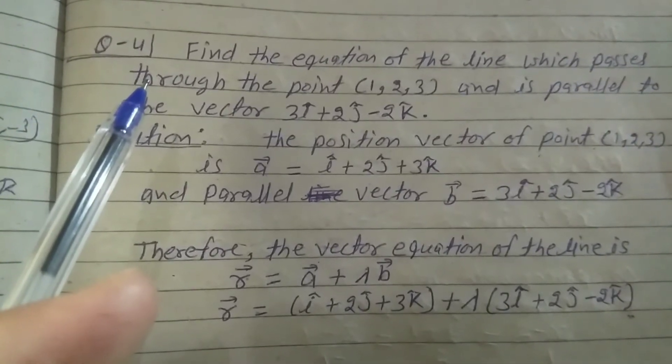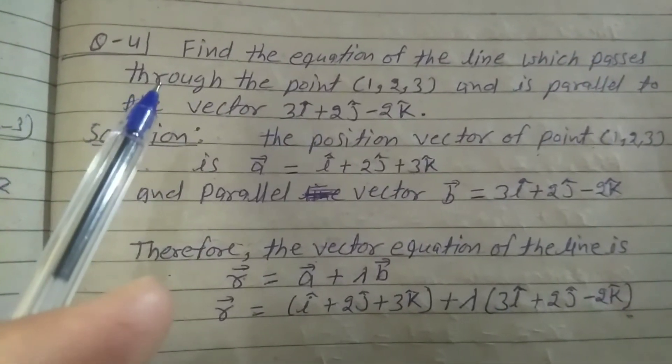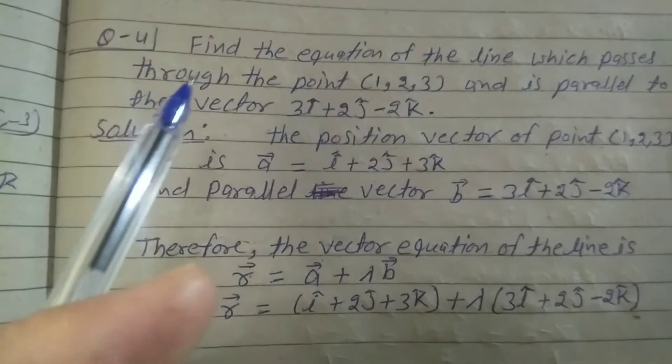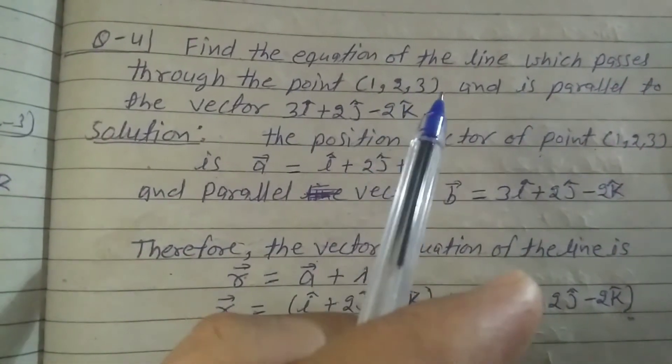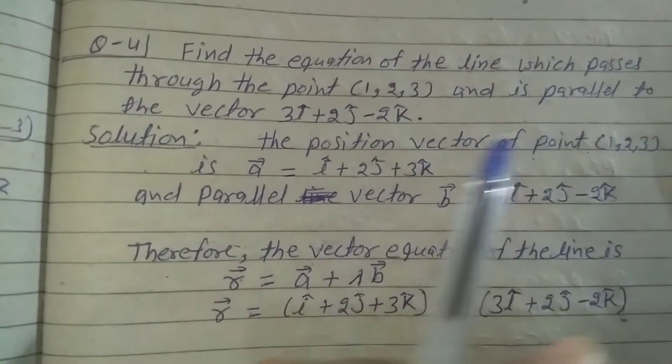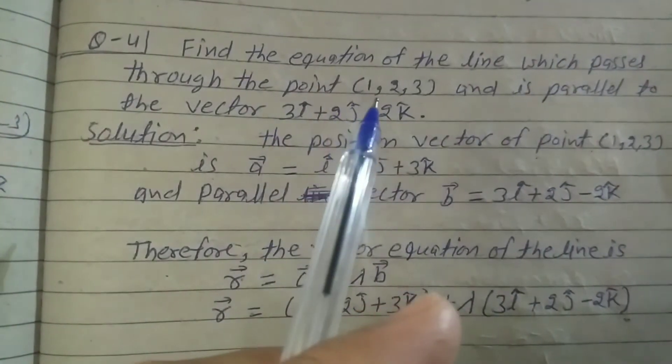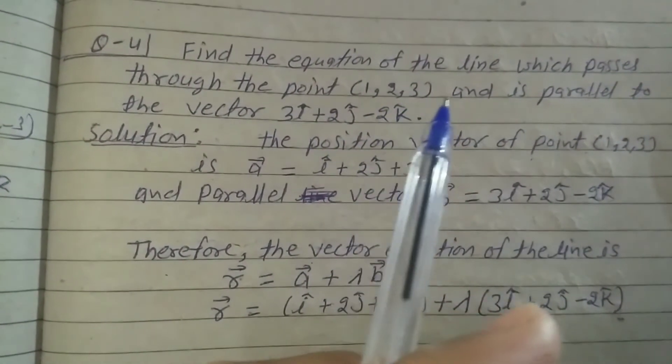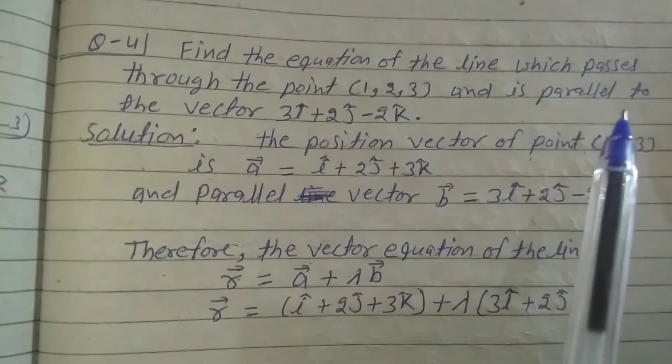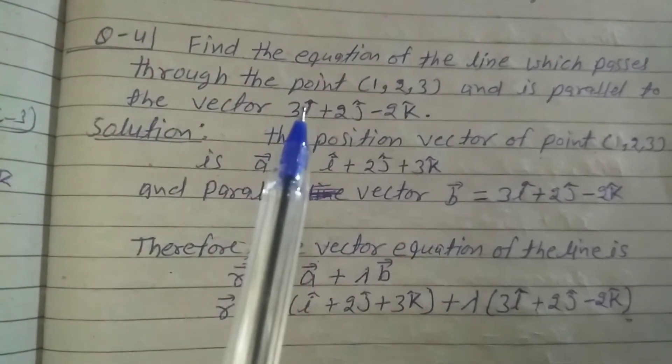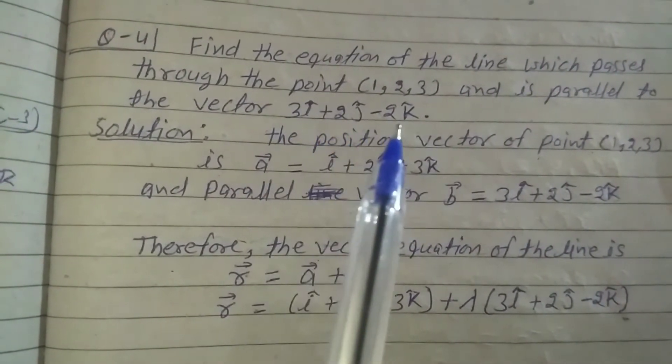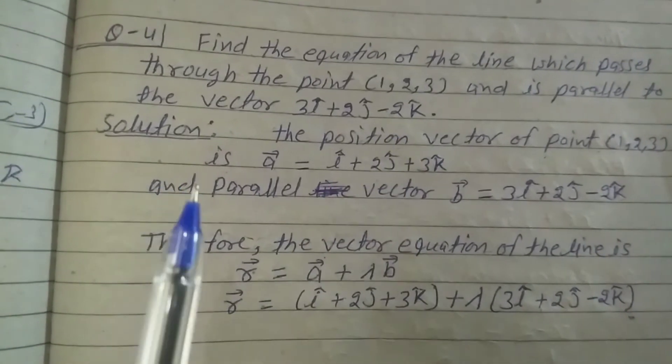I'll explain equation number 4 of exercise 11.2 of class 12. Find the equation of the line which passes through the point (1, 2, 3) and is parallel to the vector 3i cap plus 2j cap minus 2k cap. Solution: